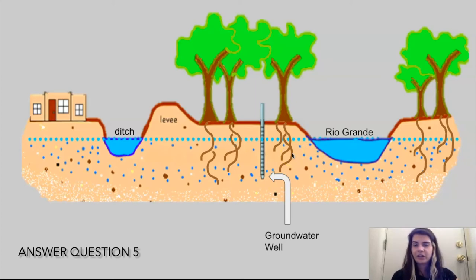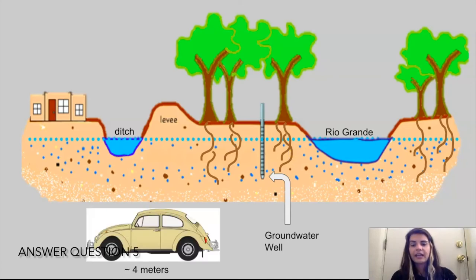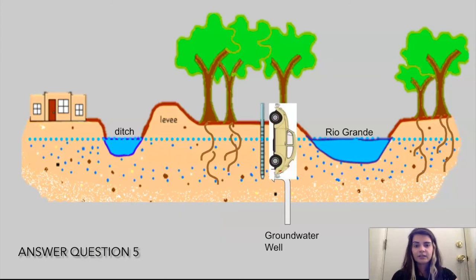Four meters is kind of hard to conceptualize. Think about a Volkswagen bug, that's about four meters long. If you flip that vertically, that is how far down our groundwater wells go below ground. That's because the roots of cottonwoods go about three meters down, so we want to see if the cottonwoods have enough water available to them.